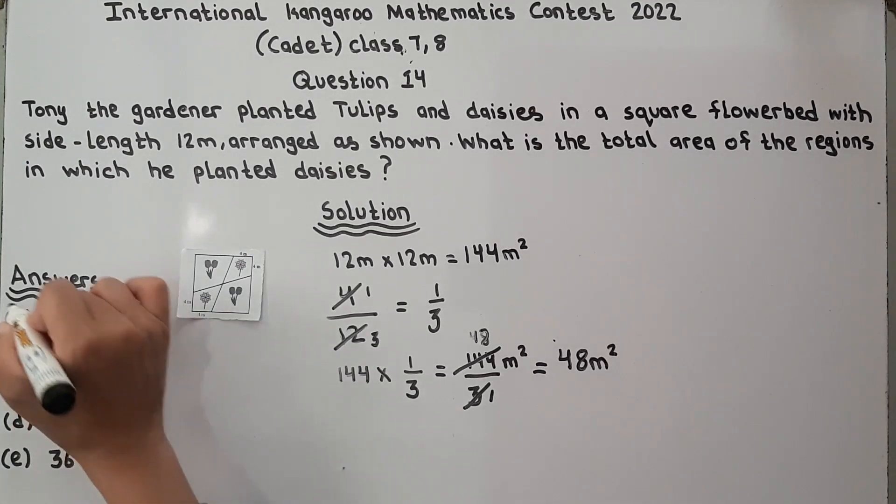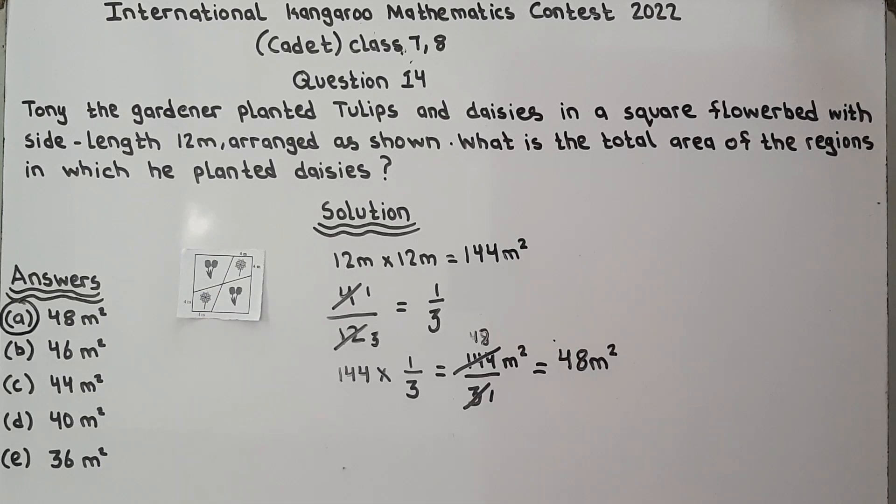So the total area of the region in which he planted daisies is 48 meters square and this is option number B and here is our answer, so here the video ends.